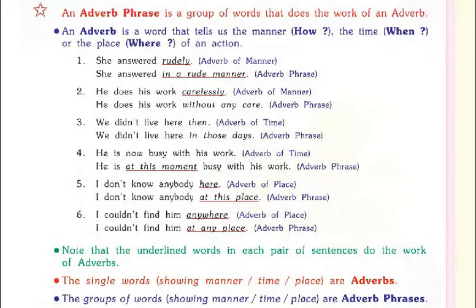Look at the following examples. First: 'She answered rudely.' The underlined word 'rudely' is an adverb of manner. Now the adverb phrase: 'She answered in a rude manner.' 'In a rude manner' is a group of words, so it is an adverb phrase. Second: 'He does his work carelessly.' The word 'carelessly' is an adverb of manner. The adverb phrase: 'He does his work without any care.'